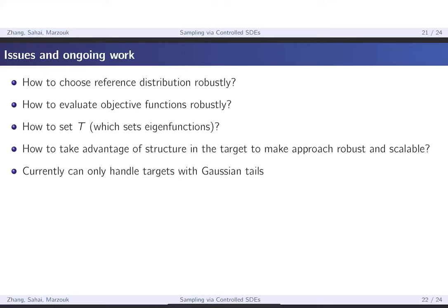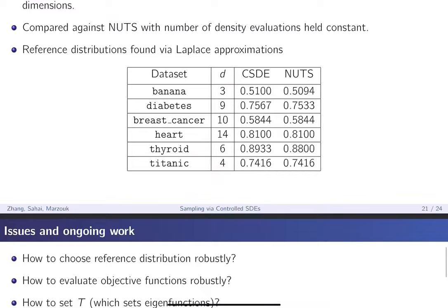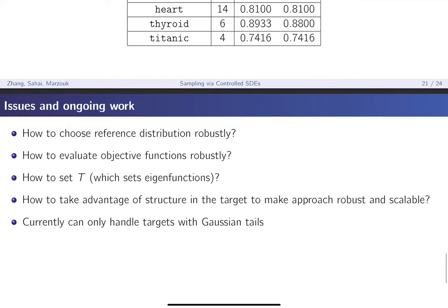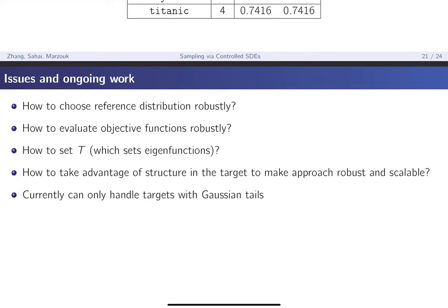There are definitely ways to take advantage of the structure of the target that we haven't looked into yet — specifically, how to make this method more scalable. The example shown goes only up to 14 dimensions, and how to make it competitive with other methods in higher dimensions still needs to be investigated. More broadly, we want to make the approach more robust. Currently we can only handle targets with Gaussian tails, and extending beyond that requires a more complicated formulation.